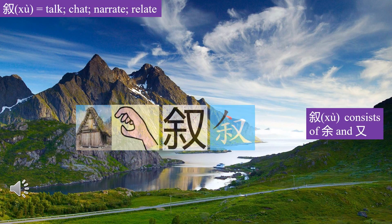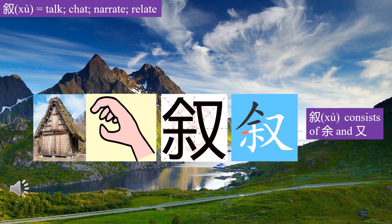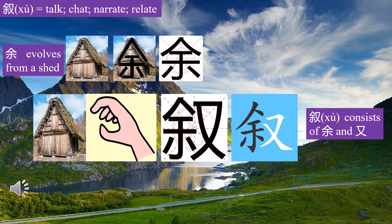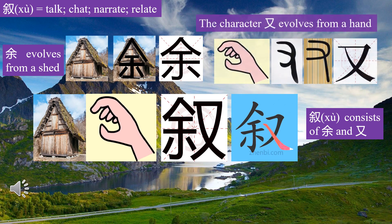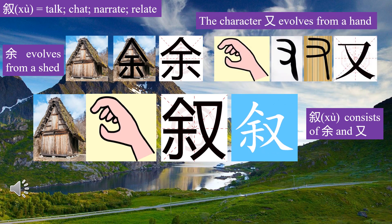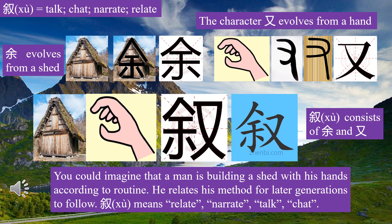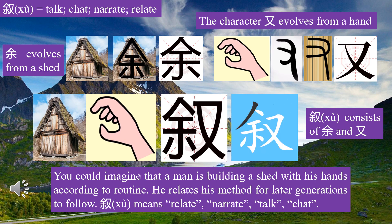Character 叙 (Xù) consists of 余 (Yú) and a hand radical. 余 evolves from a shed, and the hand radical evolves from a hand. You could imagine that a man is building a shed with his hands. According to routine, he relates his method for later generations to follow. 叙 means relate, narrate, talk, chat.